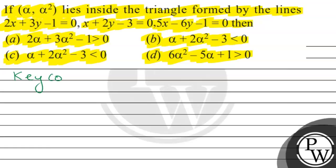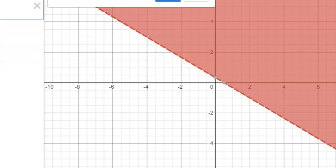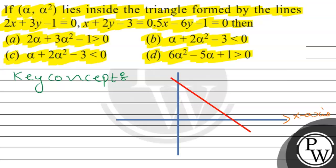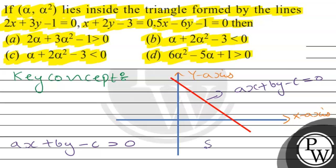The concept used to solve this question is: we will put x and y as 0 to test the origin side. If C is greater than 0, that means minus 1 is greater than 0 is false — so the region is away from the origin. The condition is: Ax plus By minus C greater than 0 means the region is on the side away from the origin.